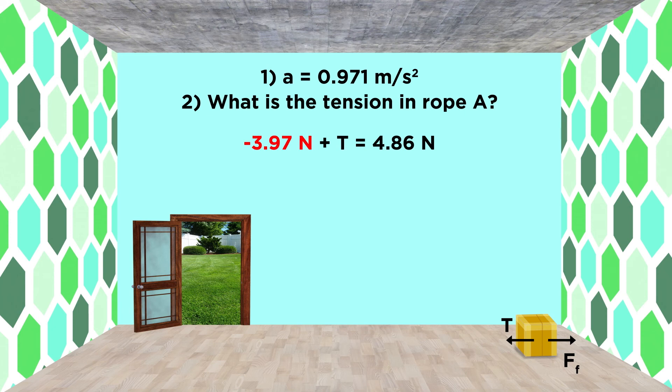Plugging in our values, making sure to keep the frictional force negative since it points in the negative direction, we see that we have to add this value to both sides, and we get eight point eight three newtons for the tension of rope A. This makes sense, as the friction must be detracting from the tension to produce a smaller net force.